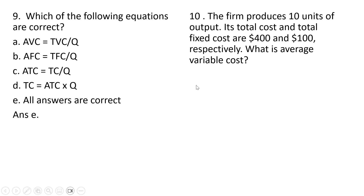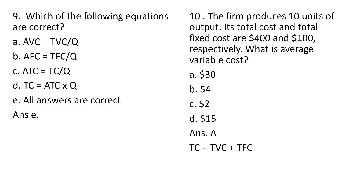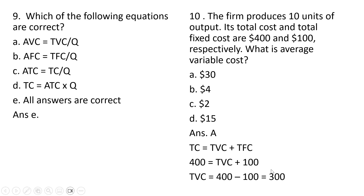Question ten. The firm produces 10 units of output. Its total cost and total fixed cost are $400 and $100 respectively. What is average variable cost? The correct answer is A, or $30. Total cost equals total variable cost plus total fixed cost, so total variable cost is $300. Dividing $300 by 10 gives average variable cost of $30. Answer choice A.